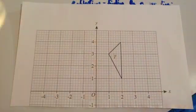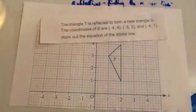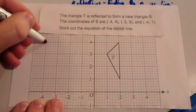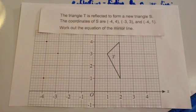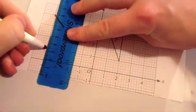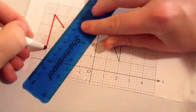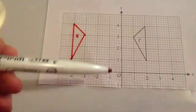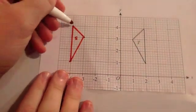Finally, let's look at a typical exam question. We have triangle T drawn for us, and we're told it's reflected to form triangle S. The coordinates of S are (minus 4, 4), (minus 3, 3), and (minus 4, 1). Let's plot and join those up. As you can see, it's been reflected with a vertical mirror line, which will be in the middle of the corresponding vertices.